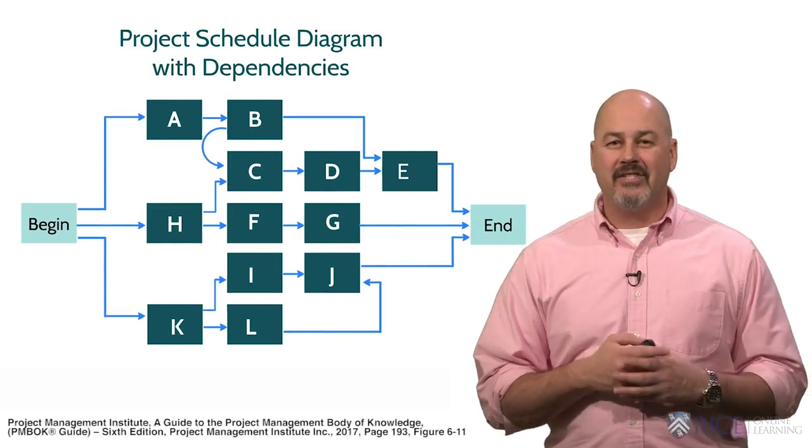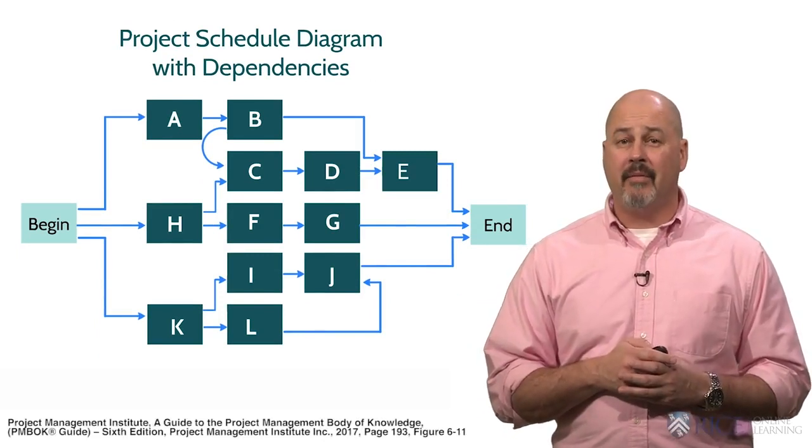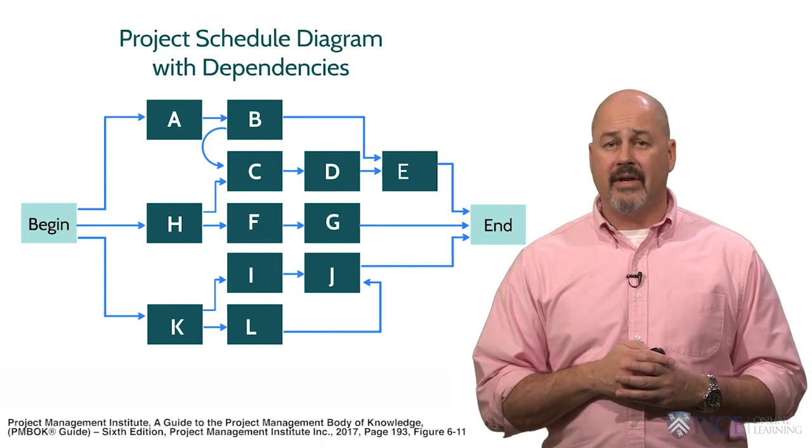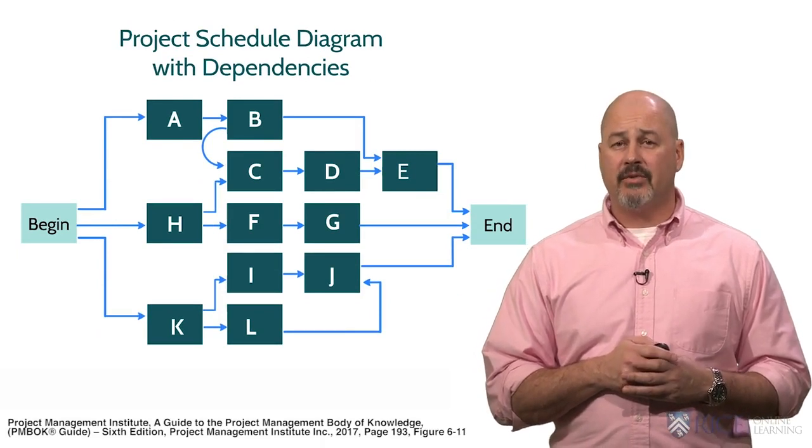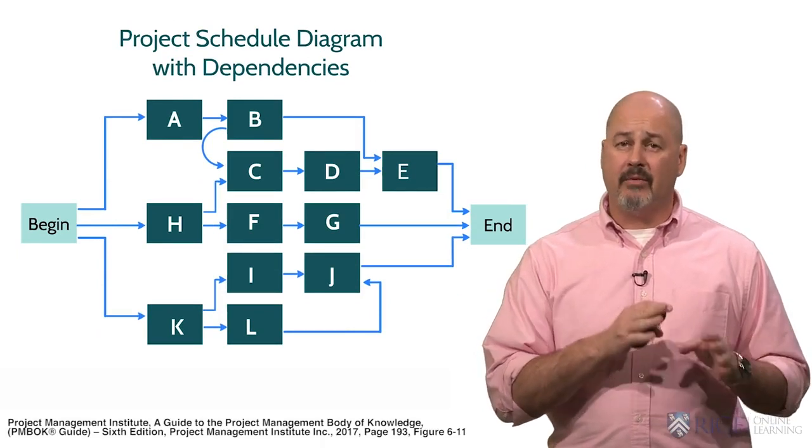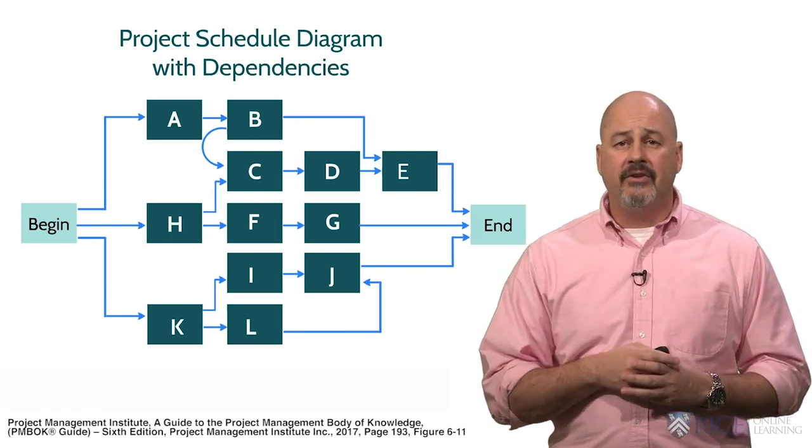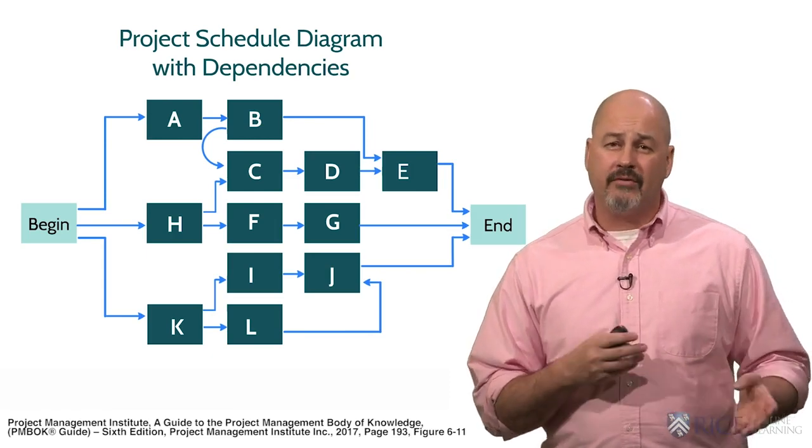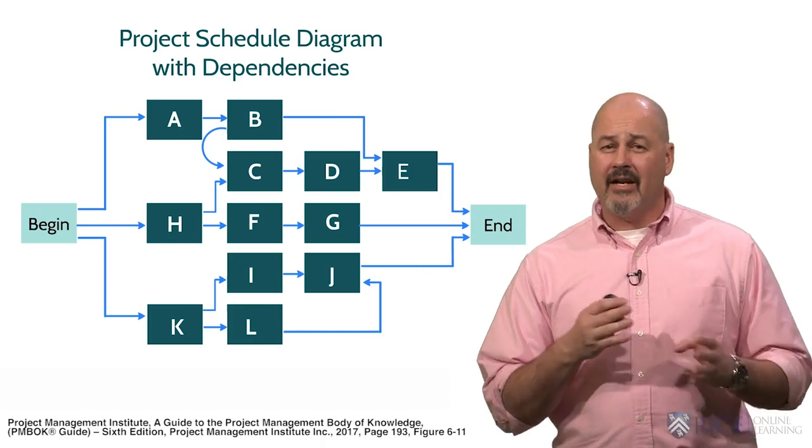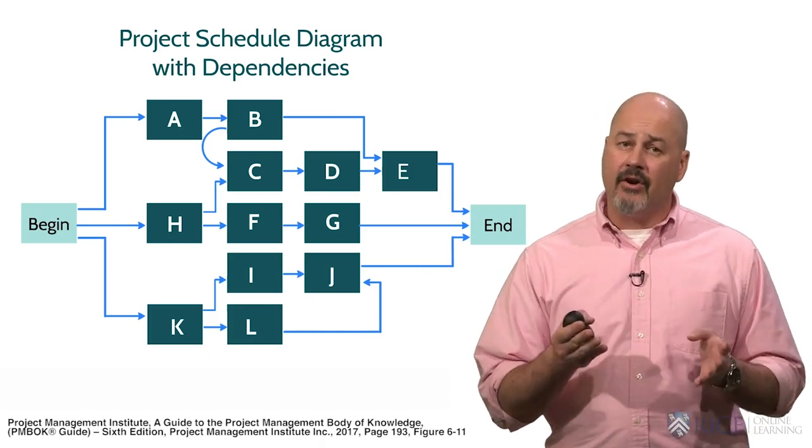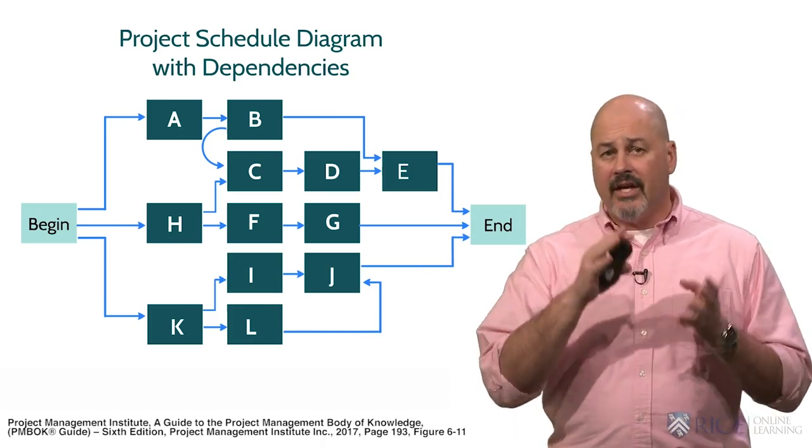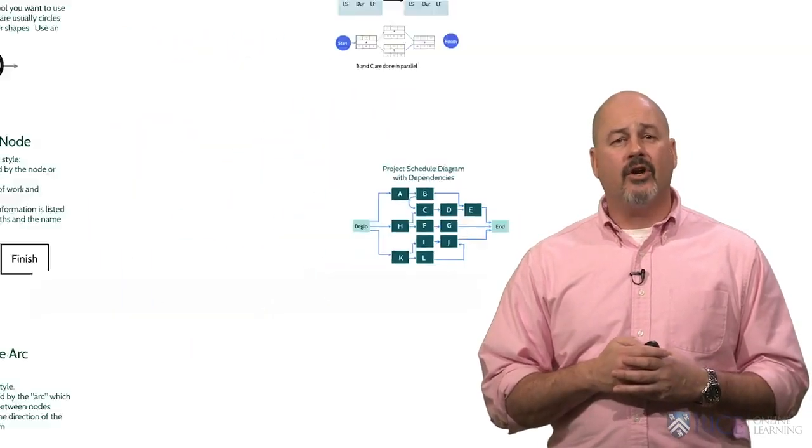As you can see in diagram 6-1-1.2 from the PMBOK, it clearly shows the precedents and dependencies of each task in this particular project, and this is a separate example showing you how to do the precedents diagram. If you get stuck trying to figure out what comes first or what tasks are dependent on another, draw it out like this first so that you can see the relationships. So now let's start creating our diagram.